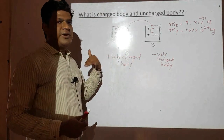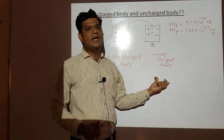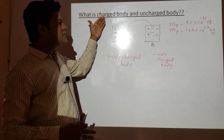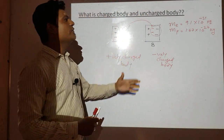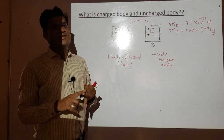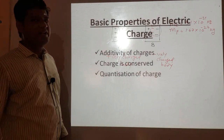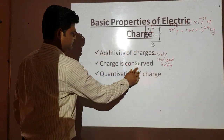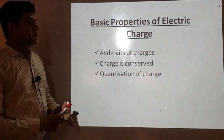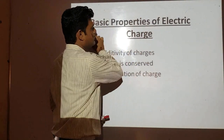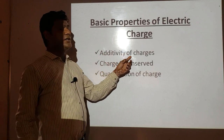Initially, before the transfer, both bodies were chargeless. After the reaction, body A became positively charged and body B became negatively charged — neutral bodies became charged. There are two types of charged bodies: positively charged and negatively charged. Now we move to the basic properties of electric charges. The first property is the additivity of charges.